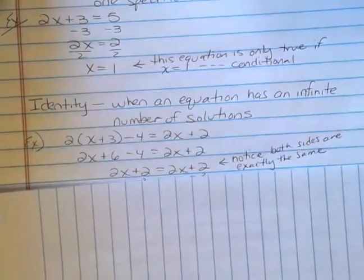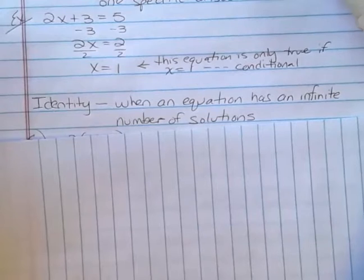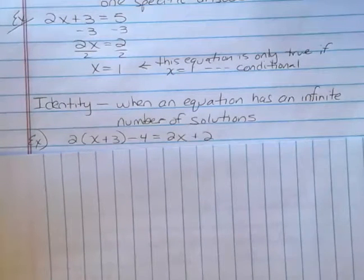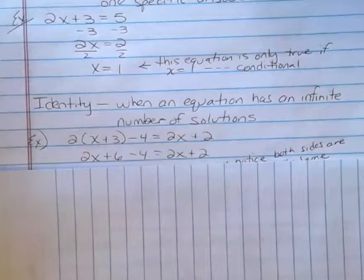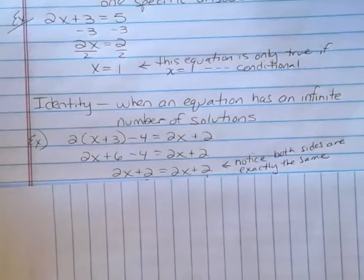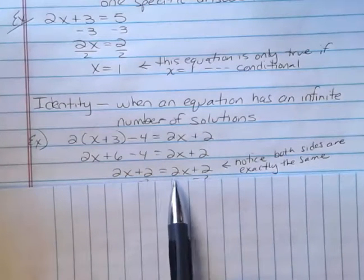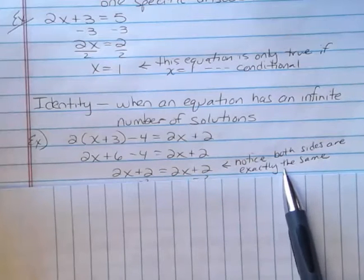Let's look at an identity. Identity is when an equation has an infinite number of solutions. So let's look at this example: 2 times parentheses x plus 3 minus 4 equals 2x plus 2. If I distribute here, I get 2x plus 6 minus 4 is 2x plus 2, and then I add the 6 and the negative 4, I get 2x plus 2 equals 2x plus 2.